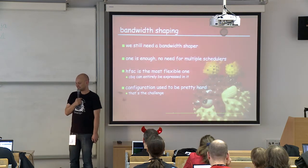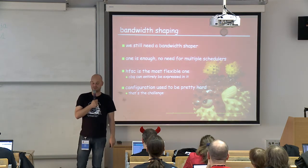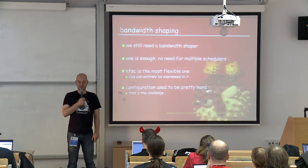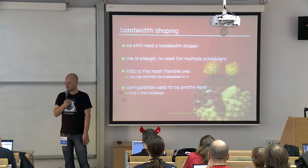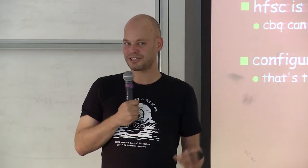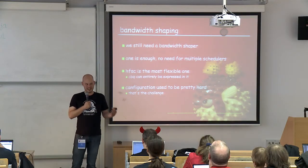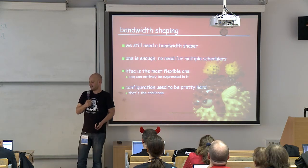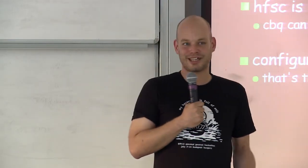With simple priority queuing in the tree, we still need a way to do bandwidth shaping. There's no need for multiple schedulers — that was due to the research nature of ALTQ. We only need one, and HFSC is the most flexible. It was pretty unusable because of the hard configuration, but the actual algorithm is the nicest. You can express CBQ entirely within HFSC, and it's also more precise than CBQ.